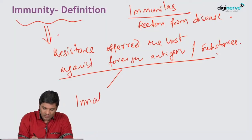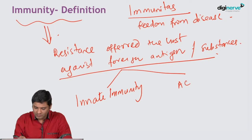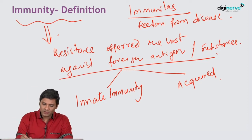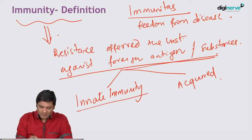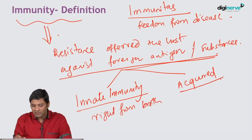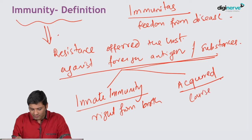If a newborn baby is exposed to some infection, can it develop any kind of immunity? Yes, that is called innate immunity. Immunity can be of two types: innate immunity and acquired immunity. Innate immunity means the resistance offered by the host against the foreign antigen which is present right from birth, whereas acquired immunity is the resistance we develop during the course of life. We will discuss more about this in the subsequent slides.